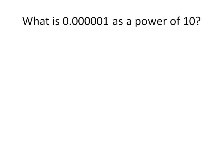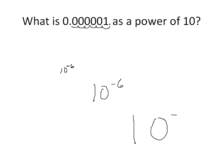Let's take a look at a question that works backwards. We're asked: what is 0.0001 as a power of 10? We count the decimal places — 1, 2, 3, 4, 5, 6 — so we're moving 6 places. Since it's a really small number and we're moving to the left, it's going to be 10 to the power of negative 6. That's our final answer.